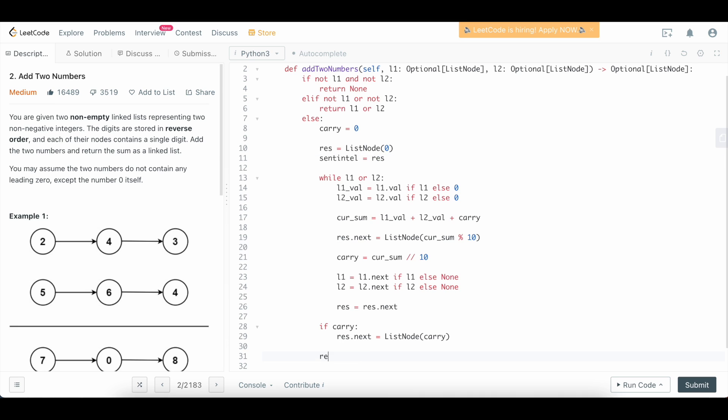So we can simply return sentinel.next to return our result, because the result was just like an empty list, so that means that we're going to start—the next value is going to be the start of our answer, so that way we can just return sentinel.next and we'll get our result list here. So let us delete this because it won't give us a syntax error, and submit it. Make sure that it works.